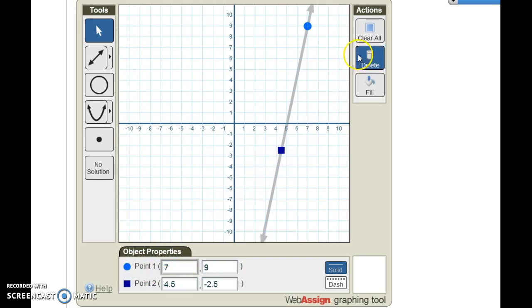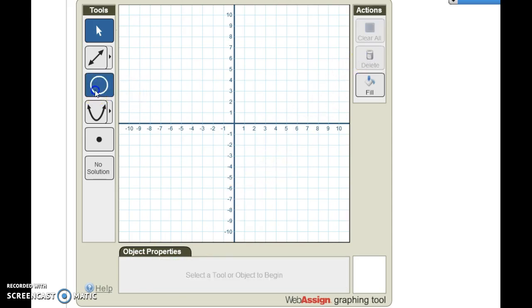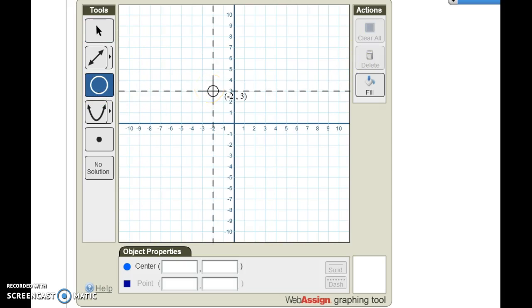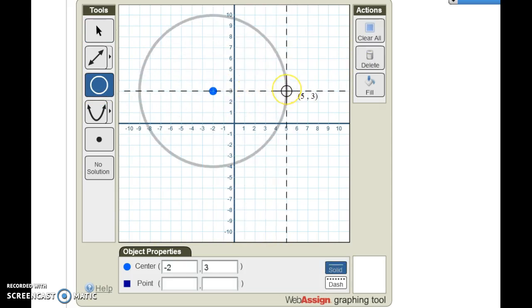Now, if I wanted to draw a circle, let me get rid of that line. A circle, you start with clicking the center and then you pick one other point which will determine the radius and then the whole circle will show up. Again, you can adjust those values down here.